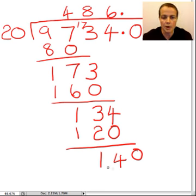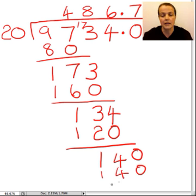20 into 140, that's 7. Goes 0.7. Love it. And so, that would be, just for the sake of neatness, 140 take away 140 equals nought.